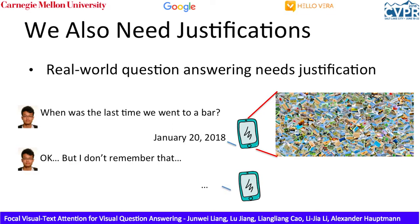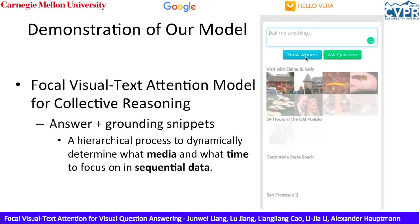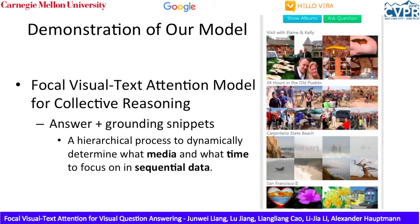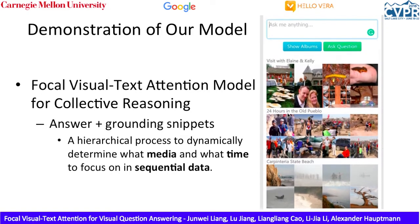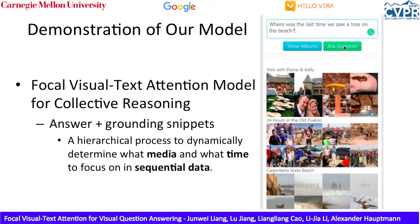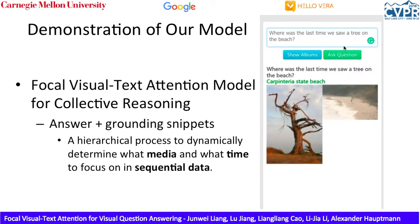To achieve these goals, we propose the Focal Visual Text Attention model for collective reasoning. Given a real-world personal collection as shown here, the system is asked 'When was the last time we saw a tree on the beach?' The system outputs the correct answer as well as the grounding snippet — the answer is Carpinteria State Beach, and the justification is the photo with the tree on the beach.